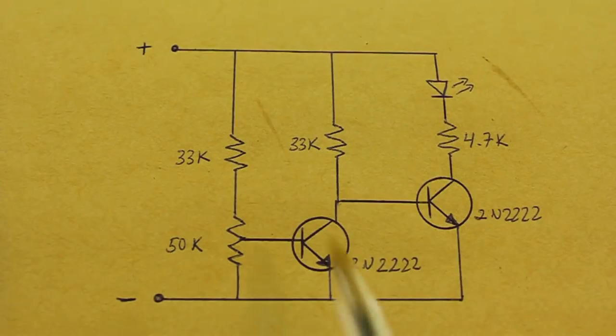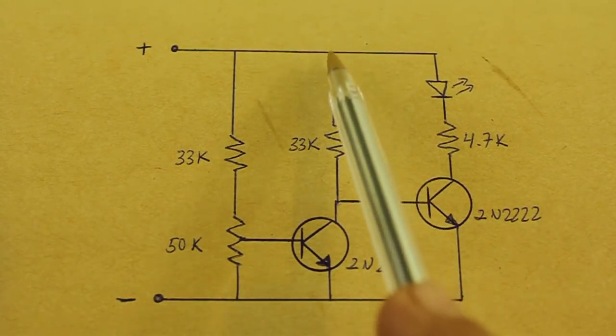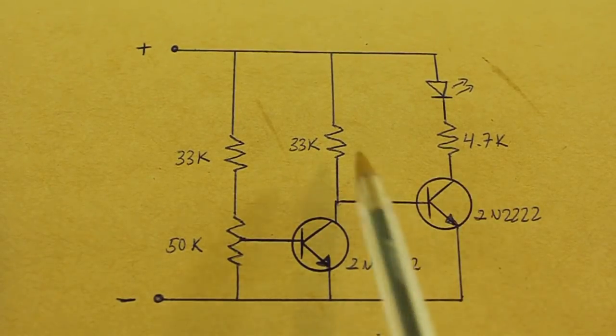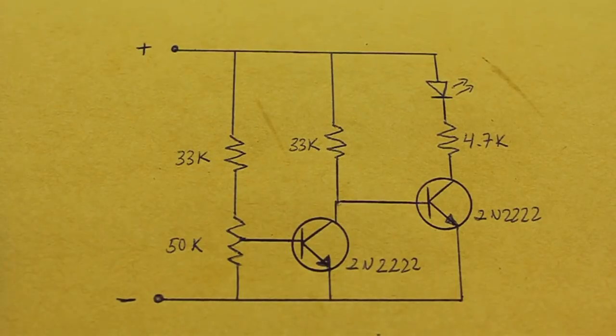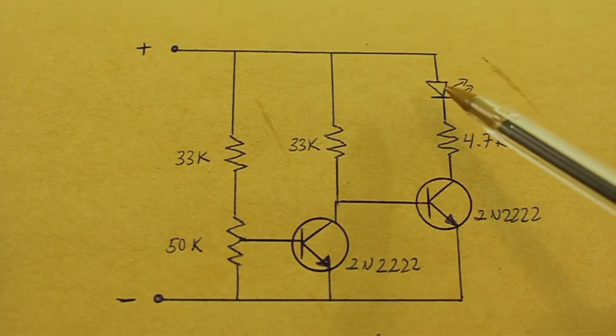Note that if this transistor is turned on, the current will not flow to the base of the second transistor and will go to ground. Therefore, the LED will not turn on.